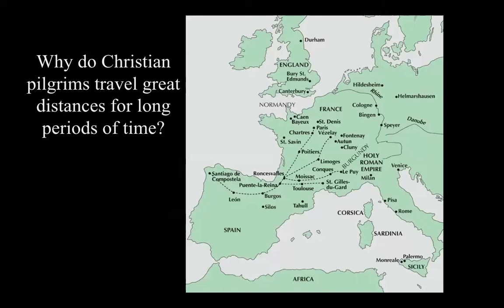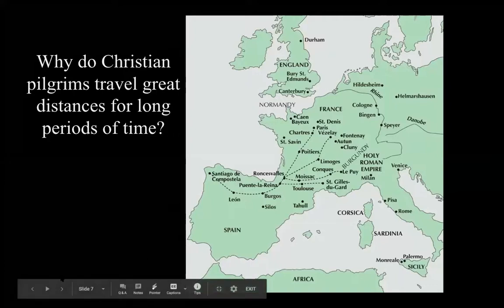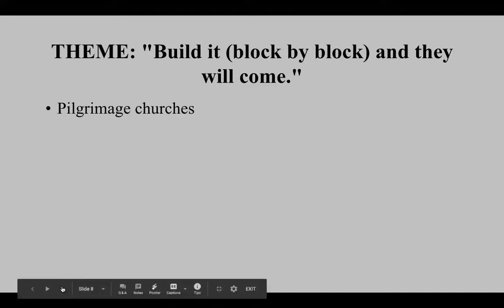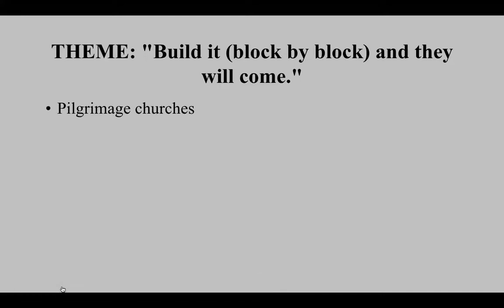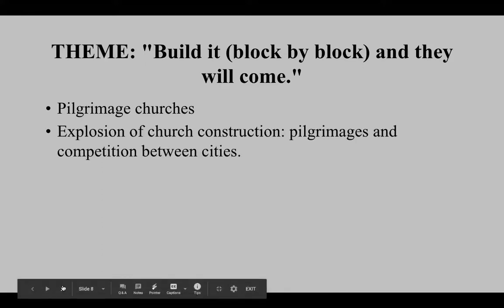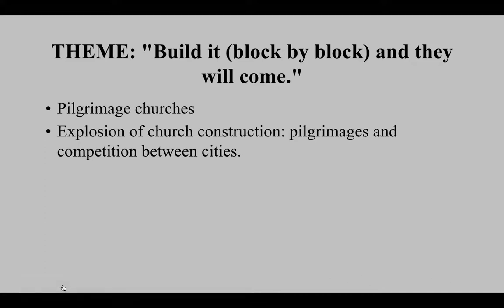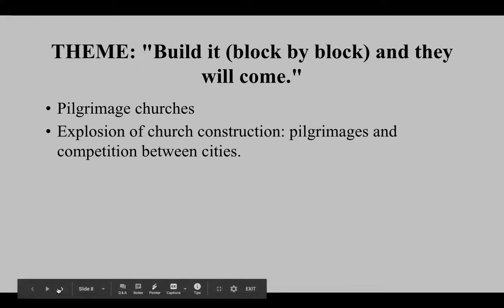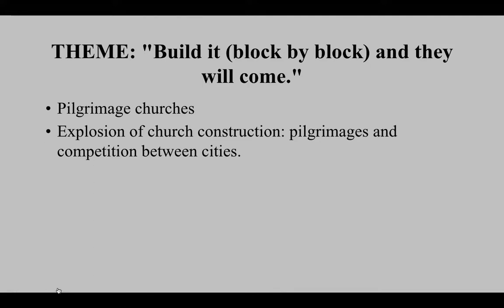Why would a Christian travel along pilgrimage routes at great cost to their private income and time? They wanted to show their religious dedication. This is a map of European pilgrimage routes — there were basically four major routes that took you to Santiago de Compostela in Spain along the coast. The theme for Romanesque is: build it and they will come. These were large pilgrimage churches built for religious devotion, and there was an explosion of church construction because cities competed for pilgrims who would spend money on food, lodging, and souvenirs.